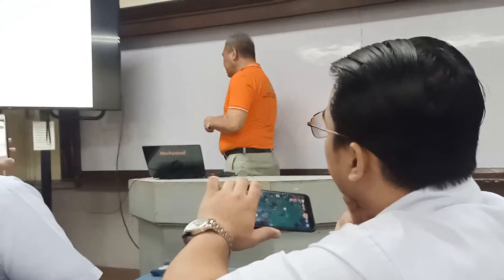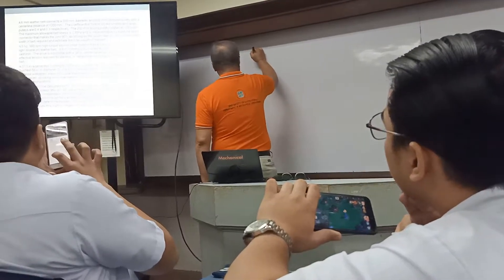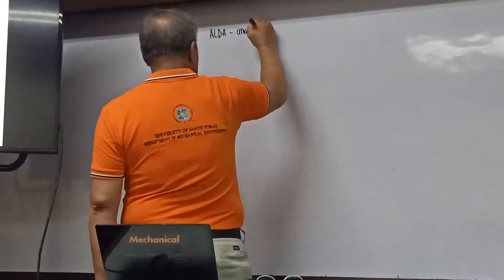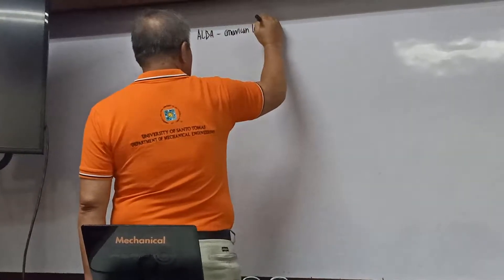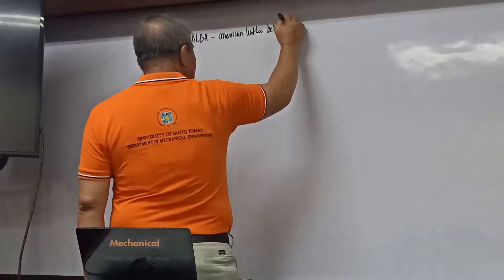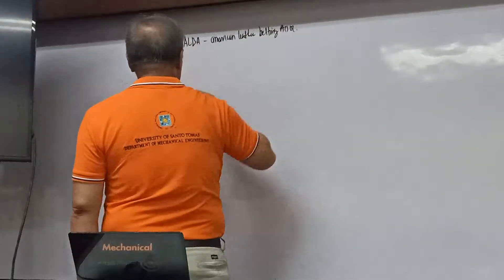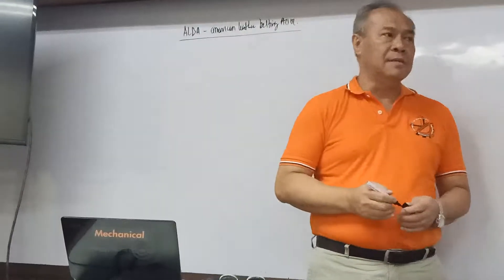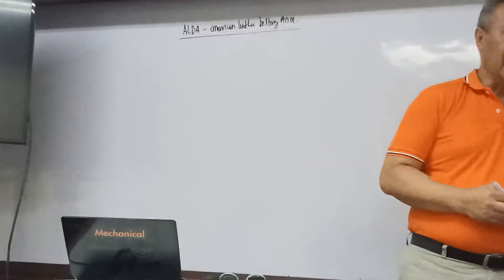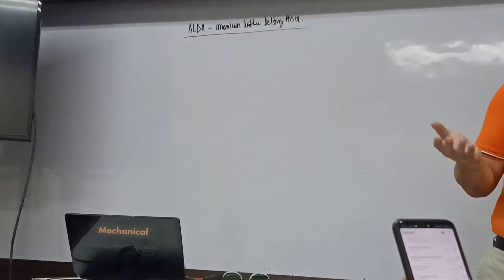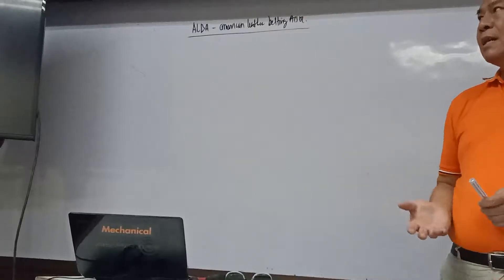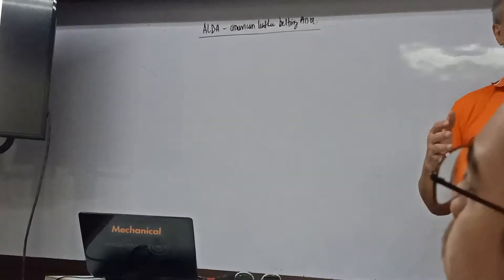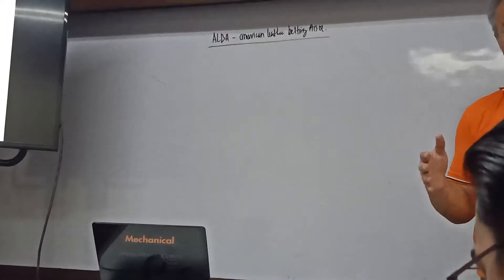From number 3, what is the ALBA equation? ALBA actually represents the acronym for the American Leather Belting Association. This association gave us a way of determining belt width without going through the general belt equation, because from the ALBA table we can determine belt width easily through certain factors.